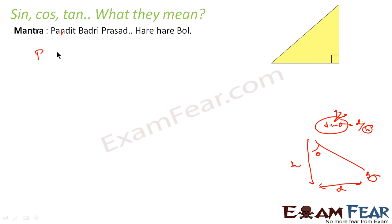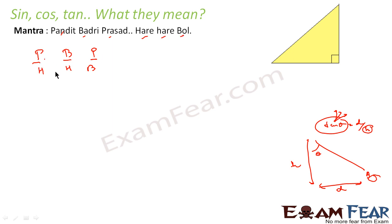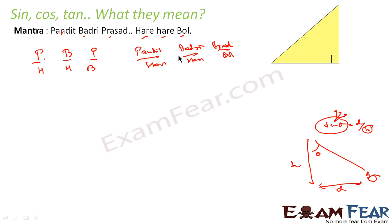So I will write it like this: Pandit → P, Badri → B, Prashad → P. Then Hari → H, Hari → H, Bool → B. So the abbreviations are P, B, P on top and H, H, B at the bottom. This is the mantra: Pandit Badri Prashad Hari Hari Bool.